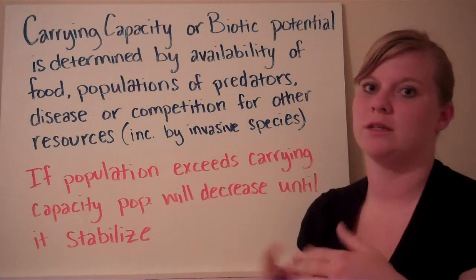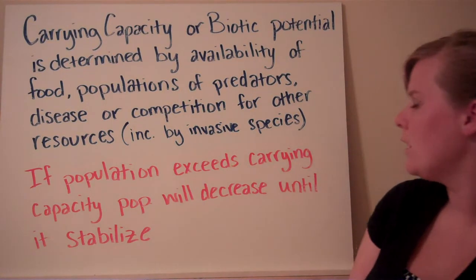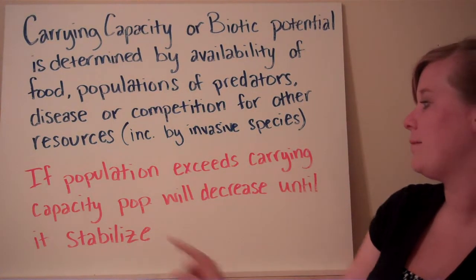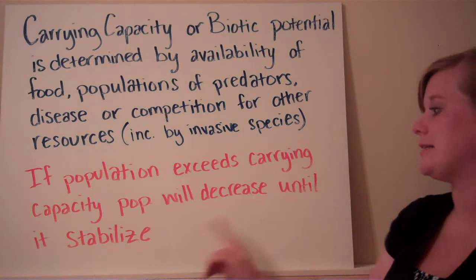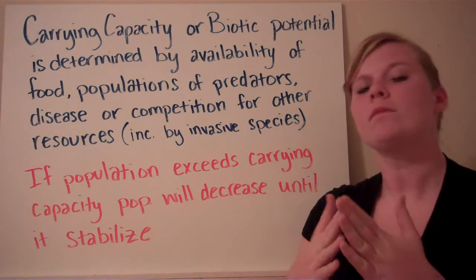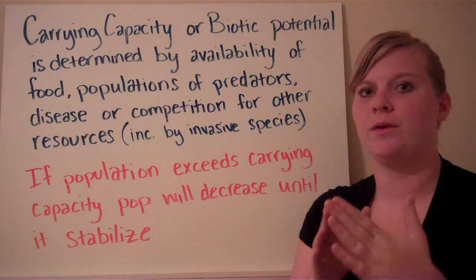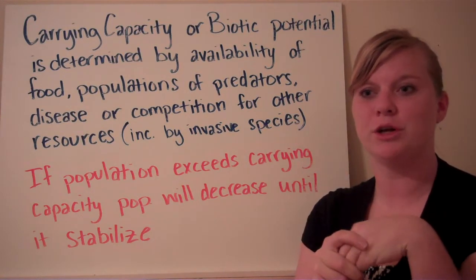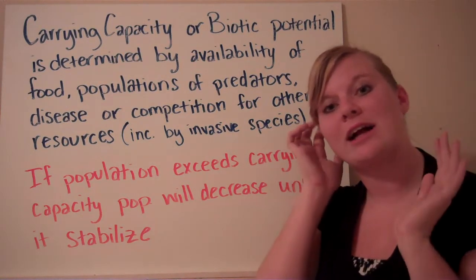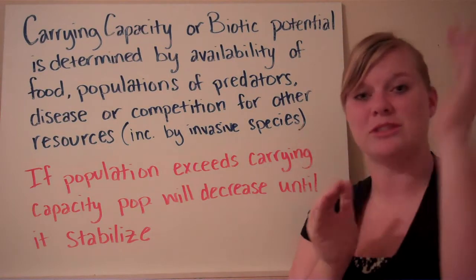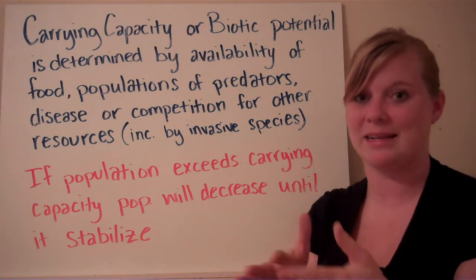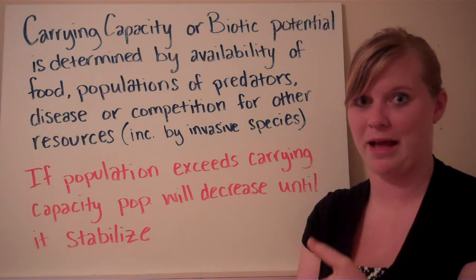If the population exceeds the carrying capacity, the population will actually decrease until it stabilizes. So if you have a sharp population growth that exceeds the carrying capacity, you're going to see animals die off and the population decrease as a way of stabilizing back to that carrying capacity.